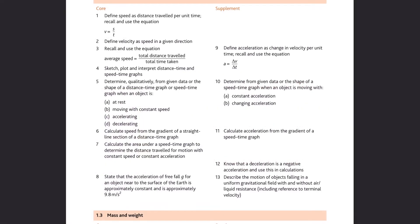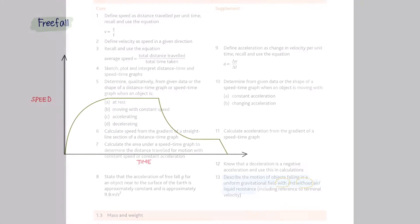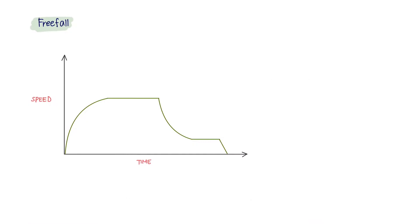The last part you should know is to describe the motion of objects falling in a uniform gravitational field with and without air or liquid resistance. This is the graph representing the motion with air resistance.